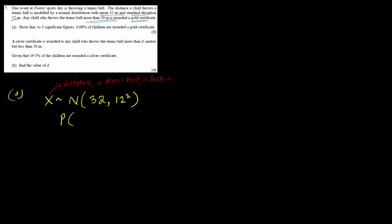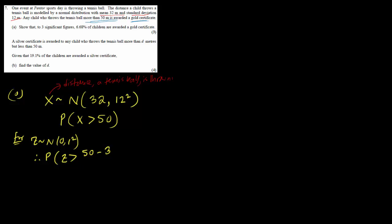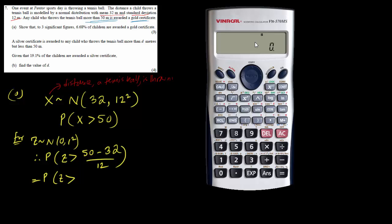We need to find the probability that X is greater than 50 meters. Step one is to make the value unit-free using the standard normal distribution Z ~ N(0,1). So we compute the Z-score: Z is greater than (50 minus 32) divided by 12, which gives Z greater than 18/12, that is Z greater than 1.5.